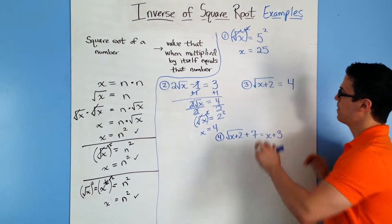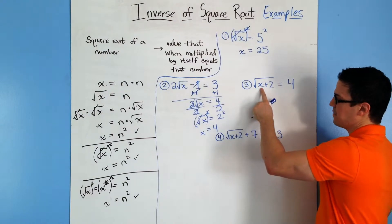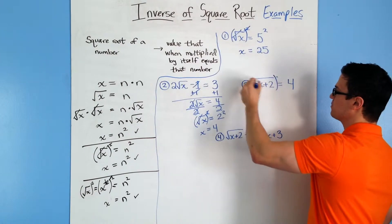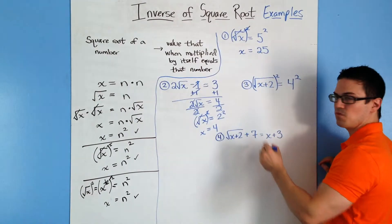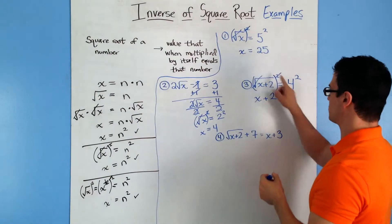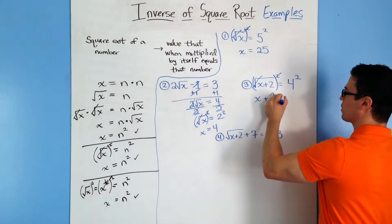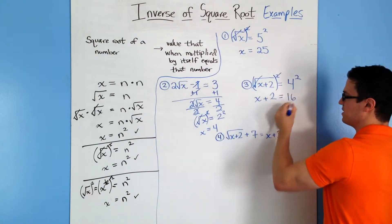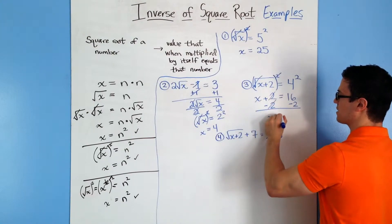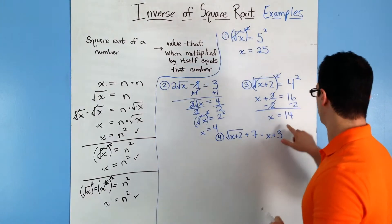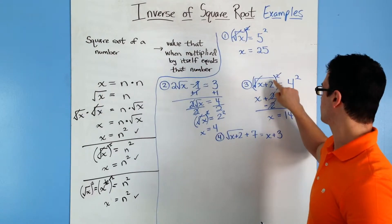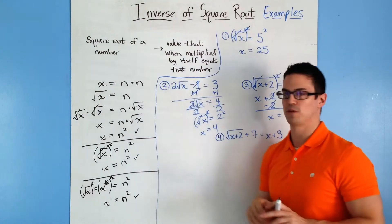Now we're on number 3. This time there's an expression inside the square root: x plus 2. The first thing you want to do is get rid of the square root, so square both sides. This cancels the square root, and now we can work with the 2 because it was under the square root before. We have 4 squared, which is 16, then subtract 2 from both sides. The 2's cancel and you end up with x is equal to 14. Let's check: 14 plus 2 is 16, and the square root of 16 is 4 — so 14 works.